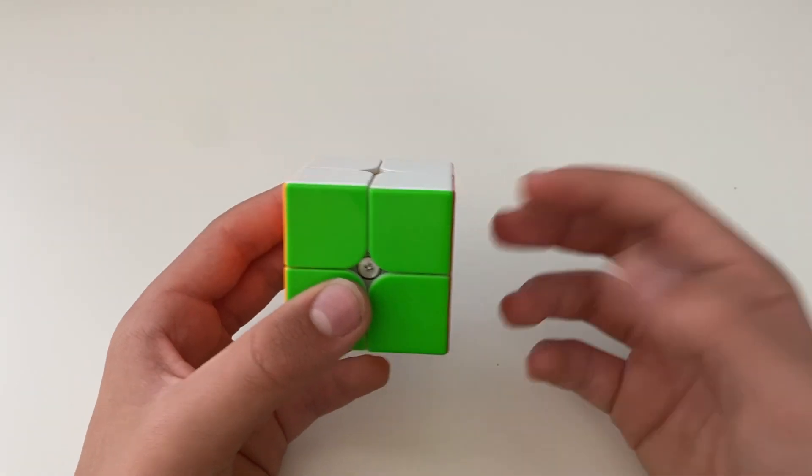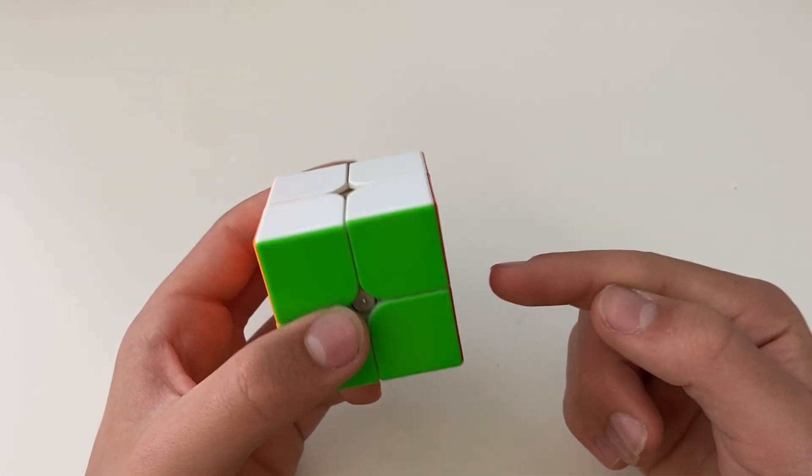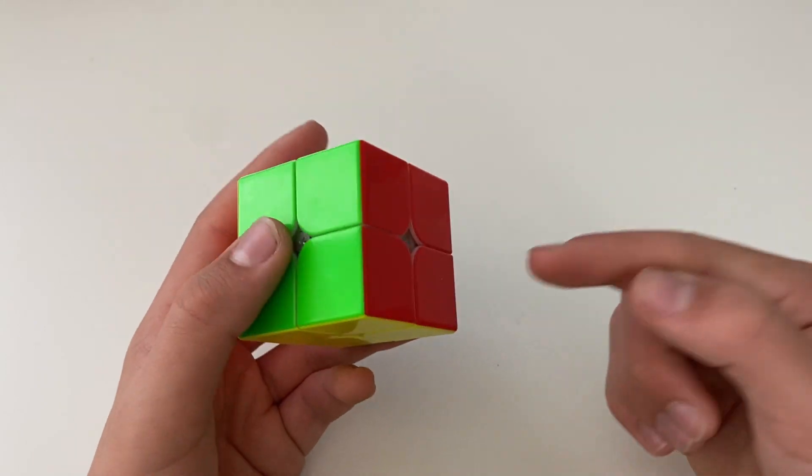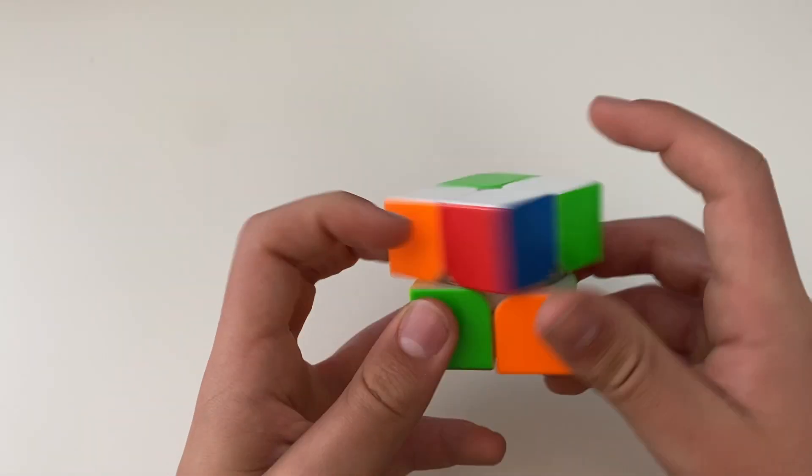So those are all the PBL algorithms for the 2x2. And for the last two, if you know the beginner method for 2x2, you should already know these. They're just, in my previous 2x2 video, a T perm and a Y perm.